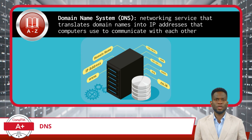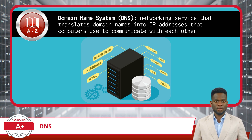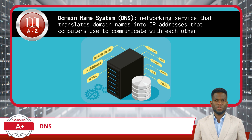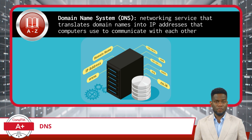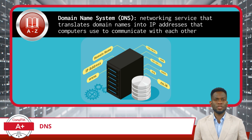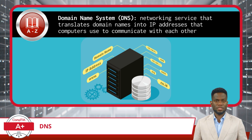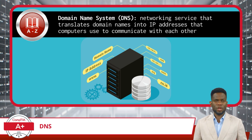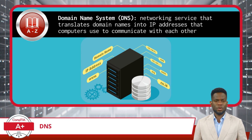Think of DNS as a phone book, allowing us to use easy-to-remember domain names such as www.certificationsenergy.com instead of complex IP addresses. These user-friendly names are known as Fully Qualified Domain Names, or FQDNs. The DNS server takes this FQDN and translates it into its corresponding IP address, directing your device to the precise location of the resource you wish to access. This conversion from FQDN to IP address is essential for navigating the Internet, as it spares us from having to memorize the numerical addresses for every website we want to access.